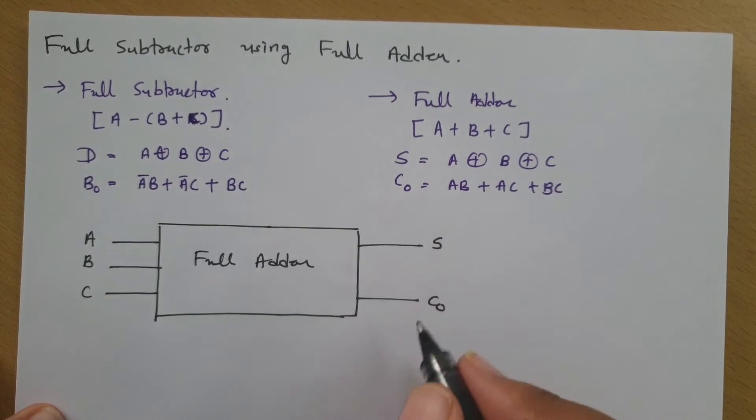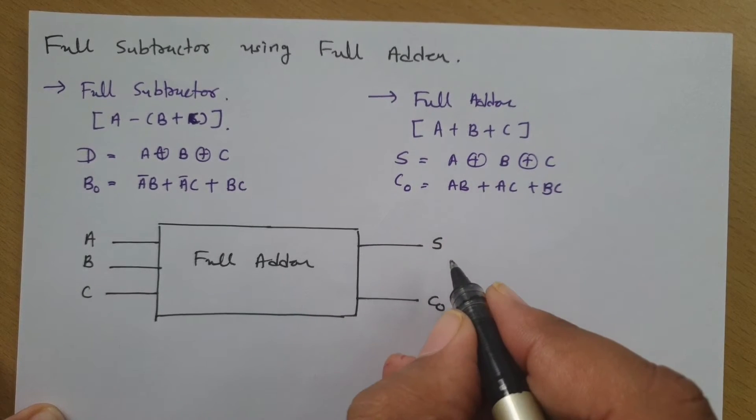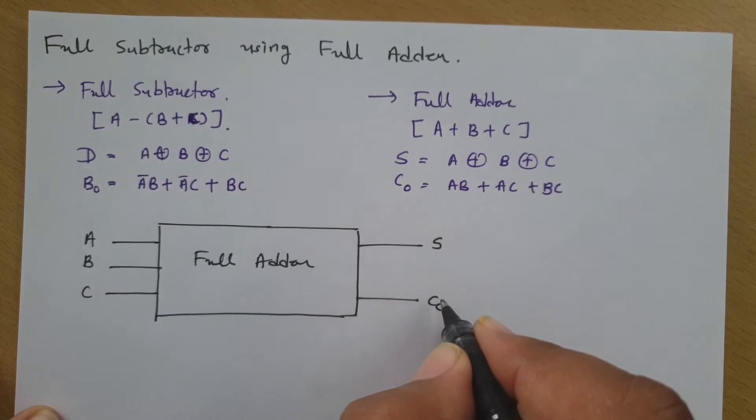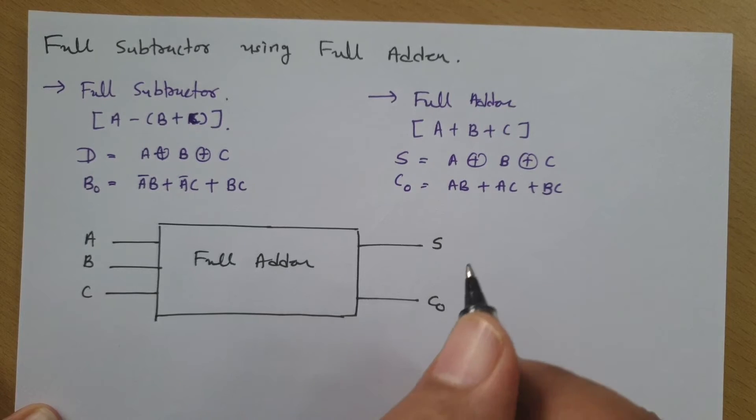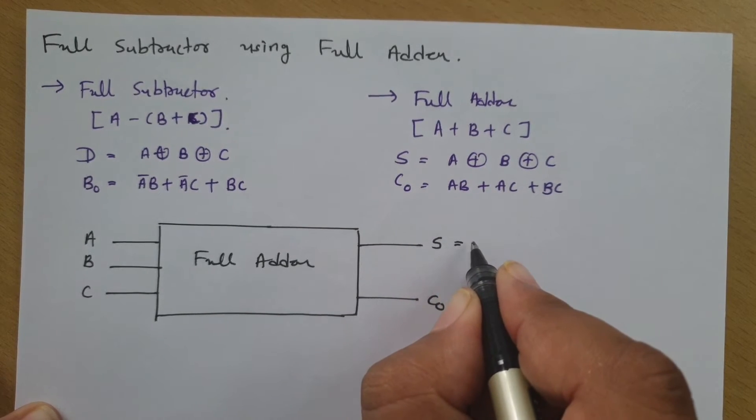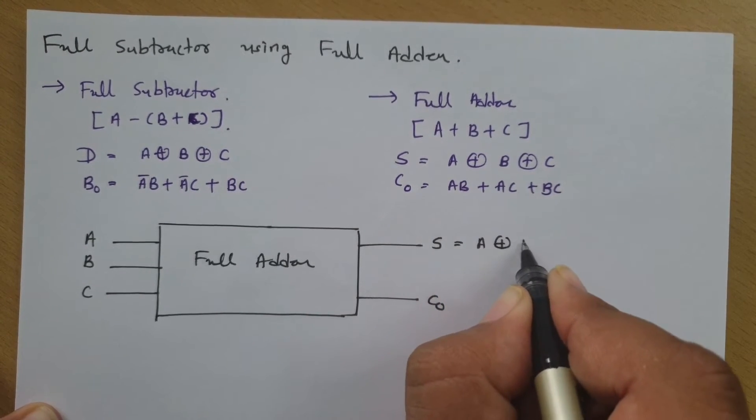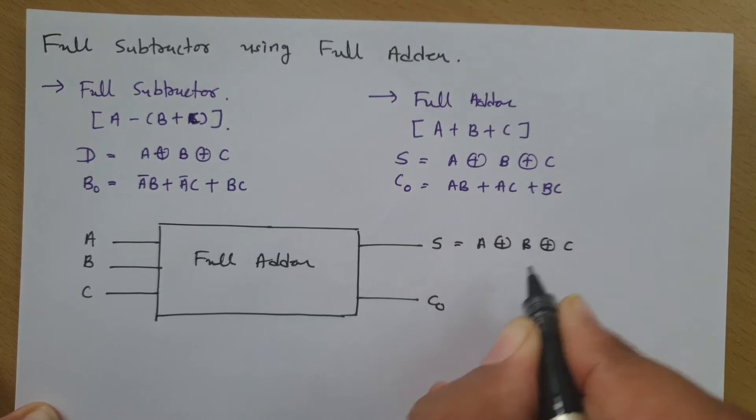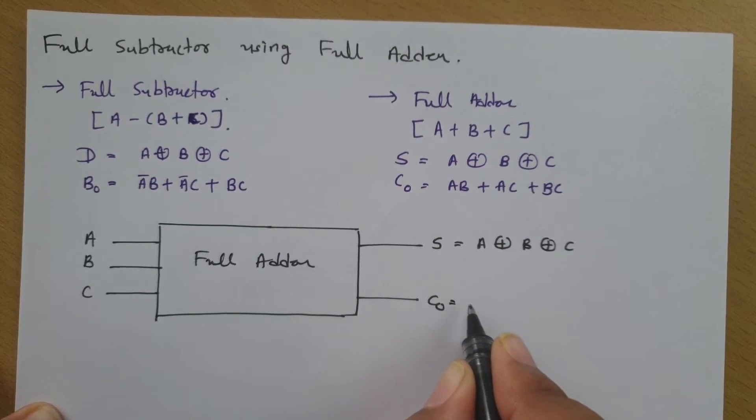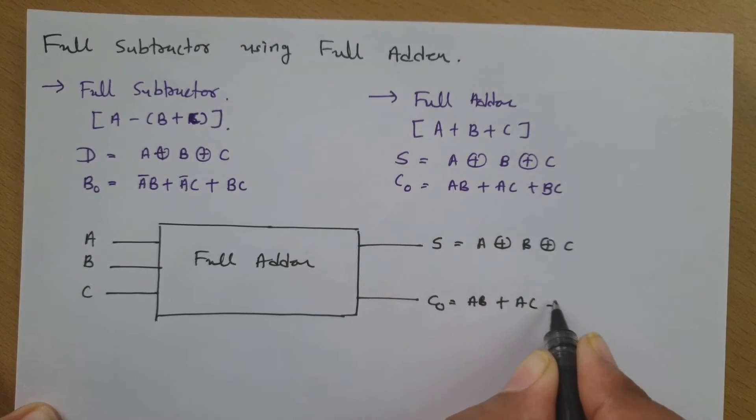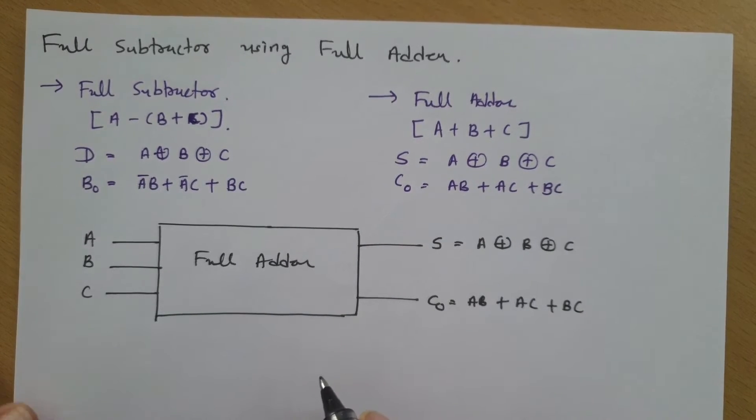In full adder circuit, we have sum and carry C zero. And if you see sum, that is A XOR B XOR C. And if you see carry, that is AB plus AC plus BC.